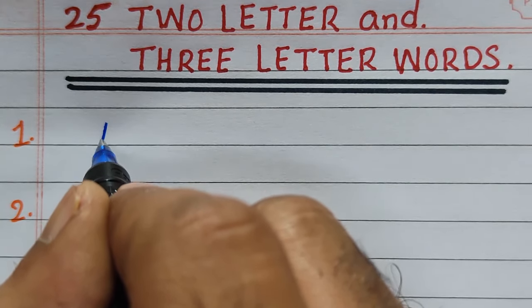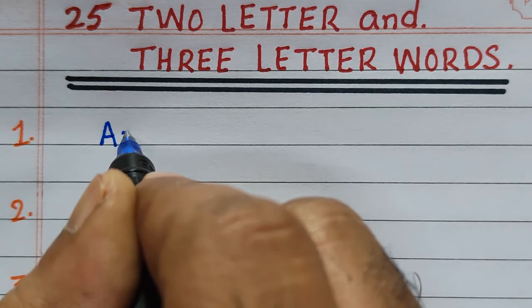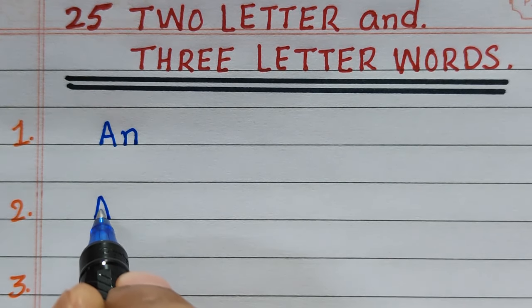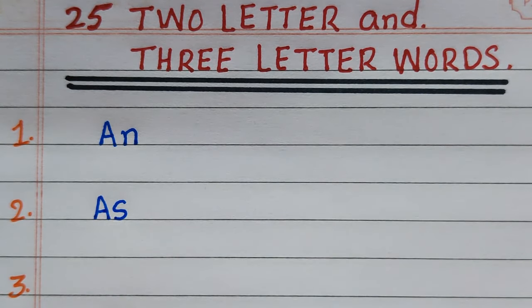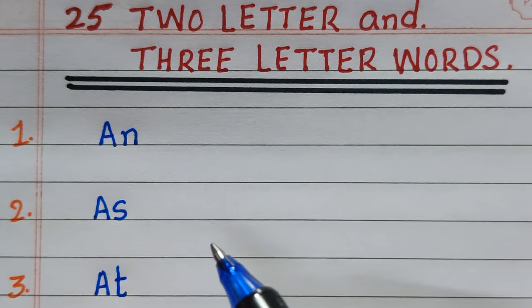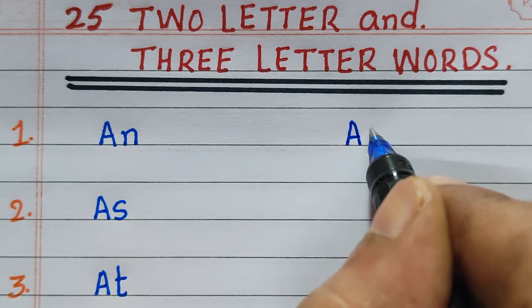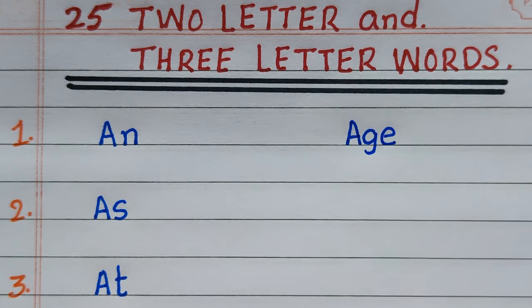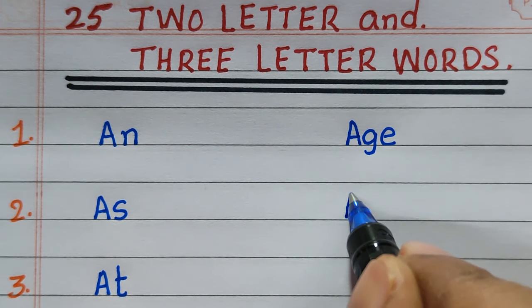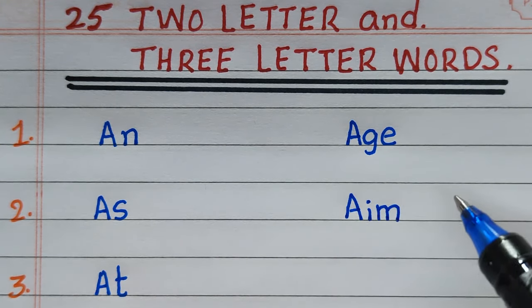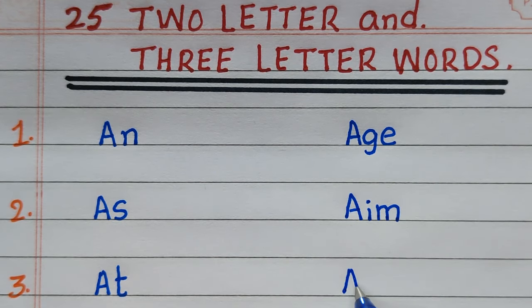First two-letter word is AN. The second two-letter word is AS. The third two-letter word is AT. Whereas the first three-letter word is AES. The second three-letter word is AIM. The third three-letter word is AAR.